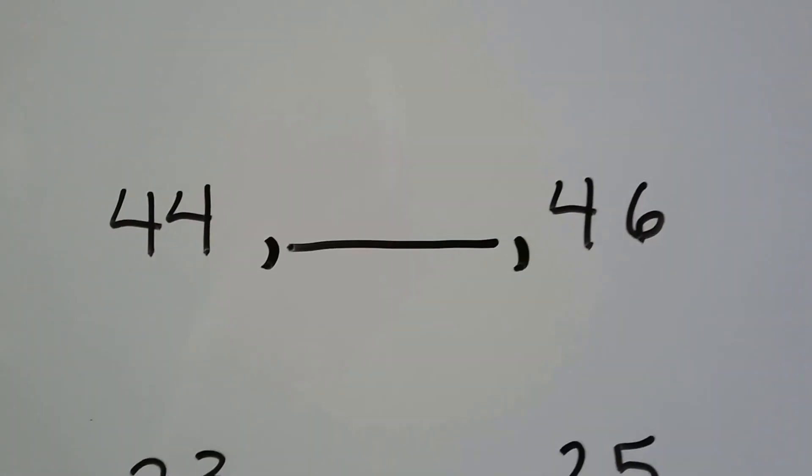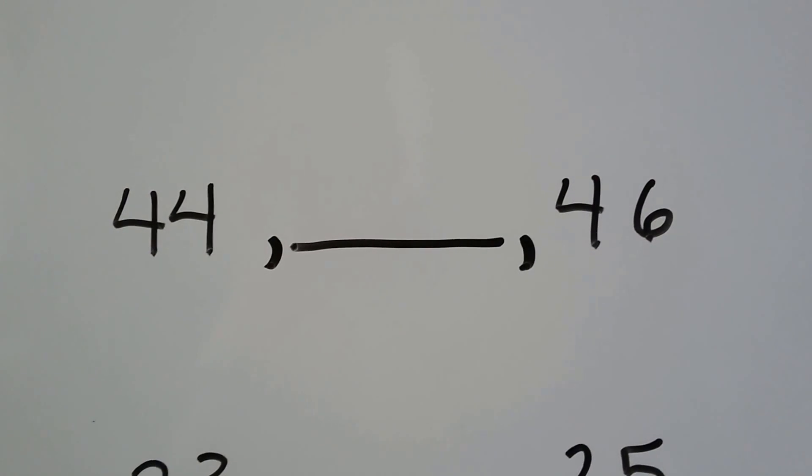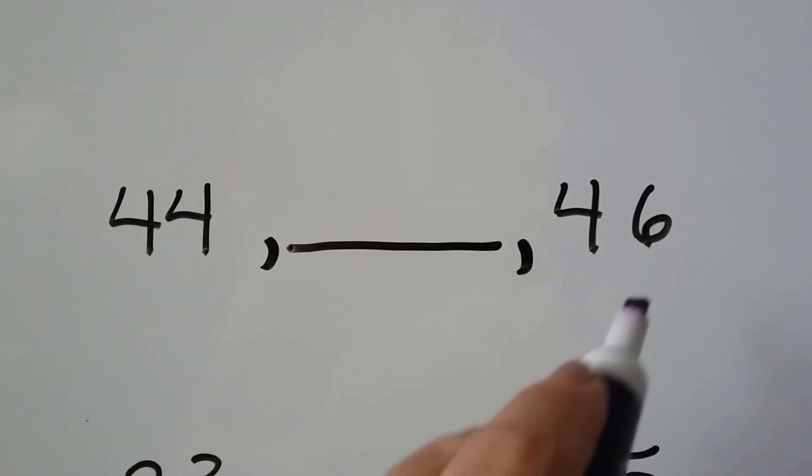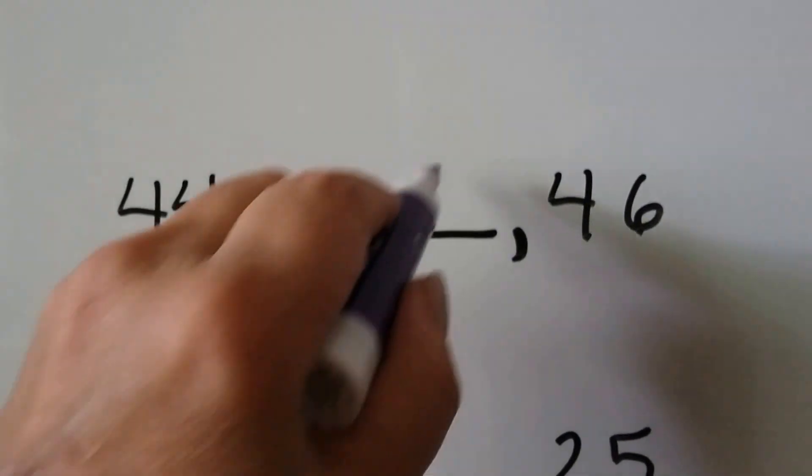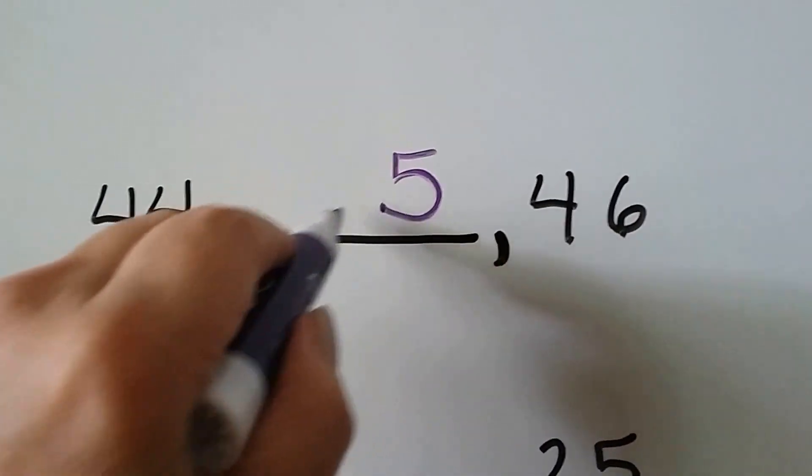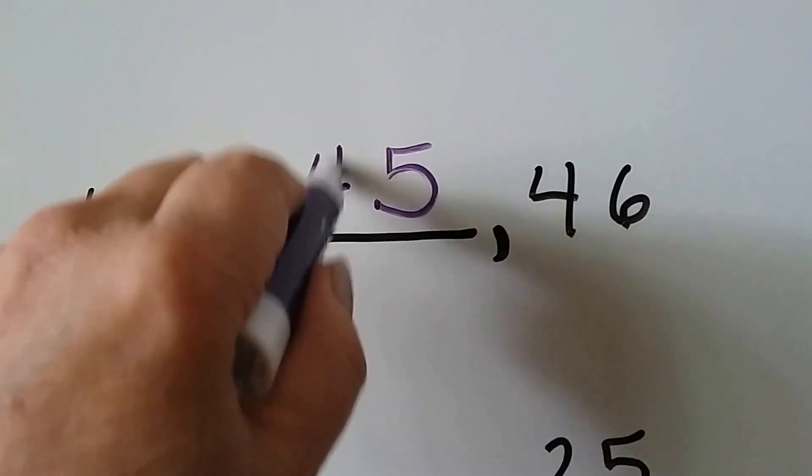What number comes between 44 and 46? We have four ones, we have six ones. The missing one would have five ones, and they all have four tens, so it would be 45.